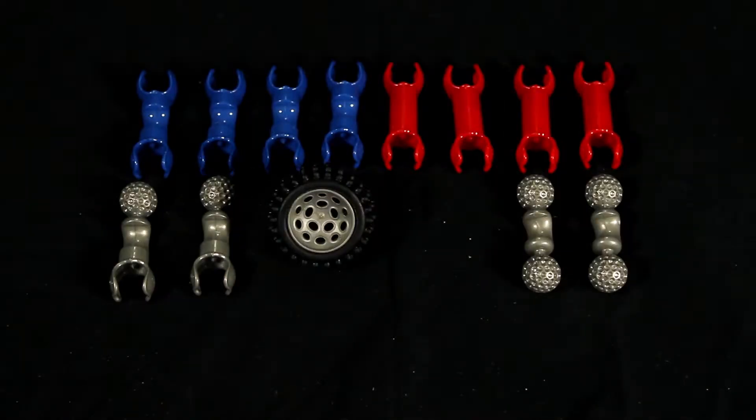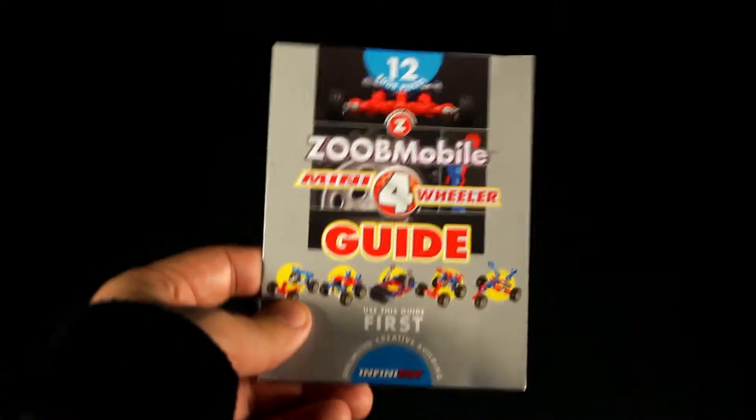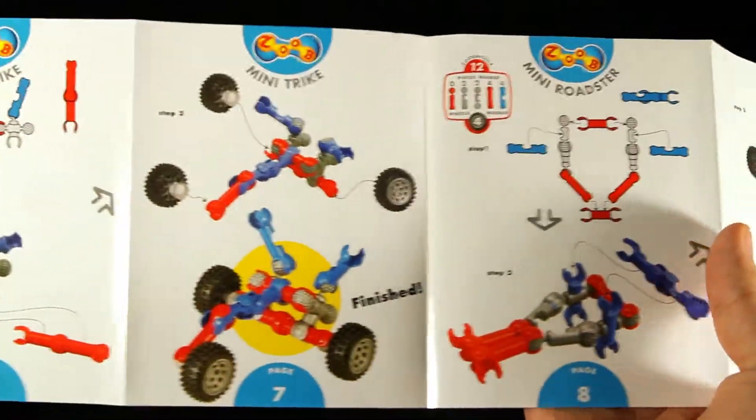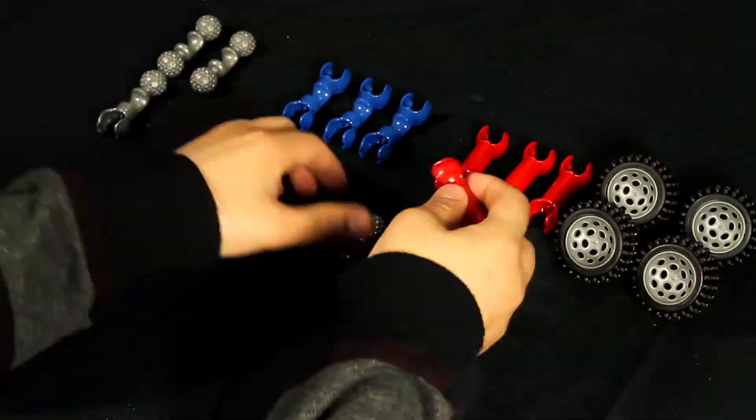Inside the box you'll get 12 ZOOB pieces, four rugged rubber tires, and step-by-step picture instructions to help you create five different mini vehicles that really roll.